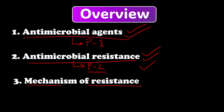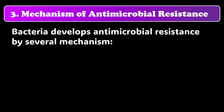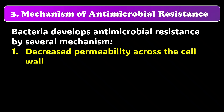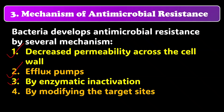In this video, we are going to discuss the different mechanisms available for bacteria to develop resistance. Bacteria can develop antimicrobial resistance by several mechanisms. Let me enumerate them: first, decreased permeability across the cell wall; second, efflux pumps; third, enzymatic inactivation; and lastly, by modifying the target sites.